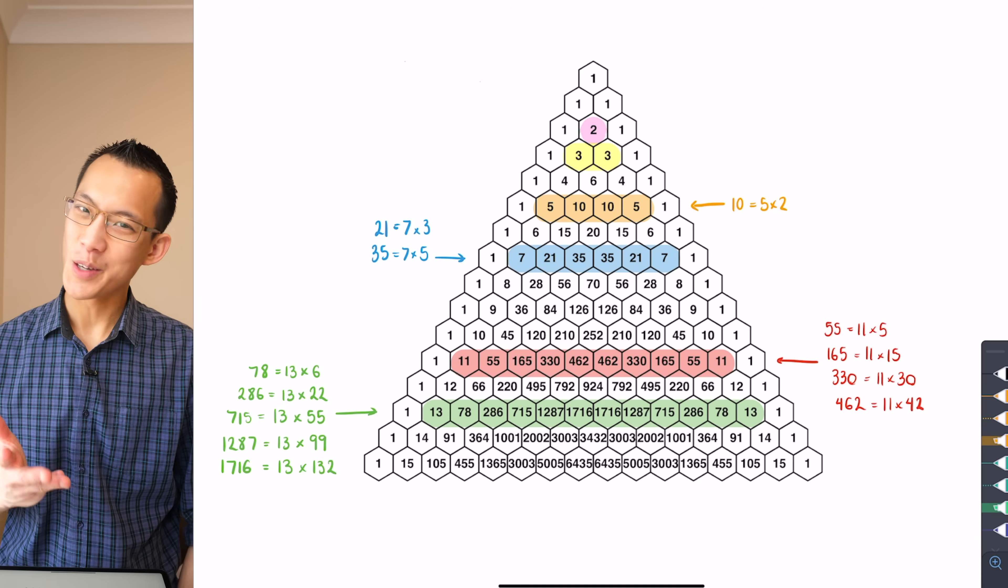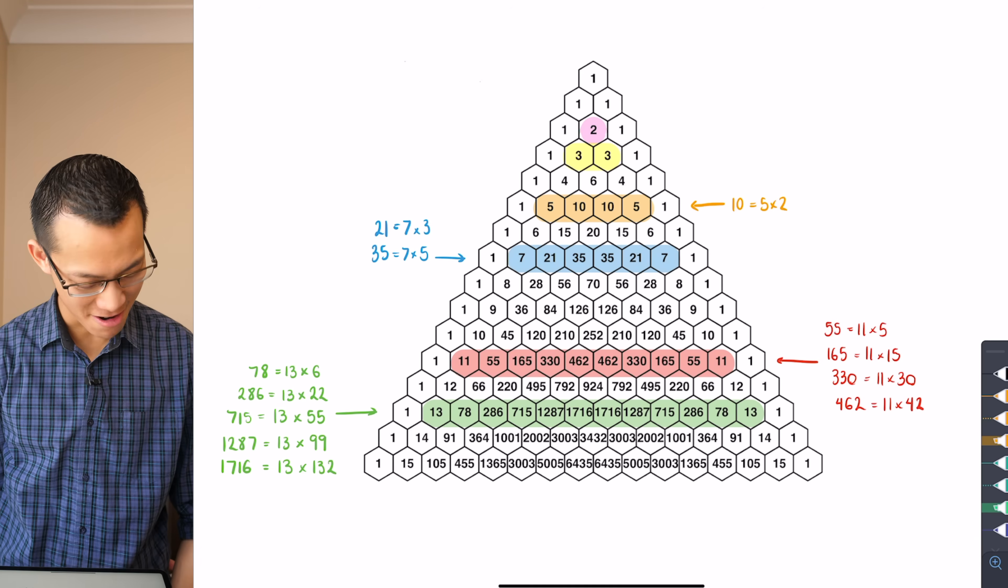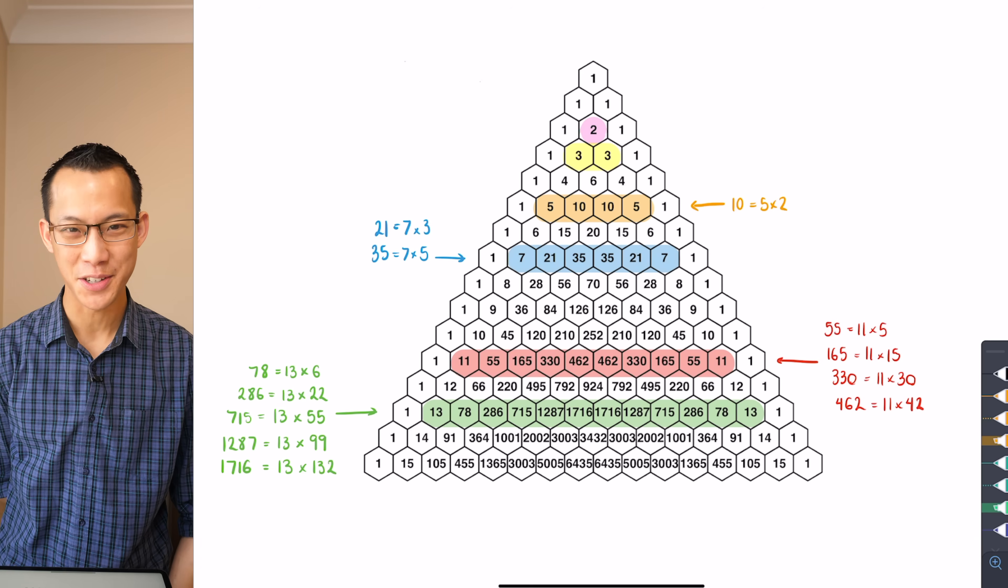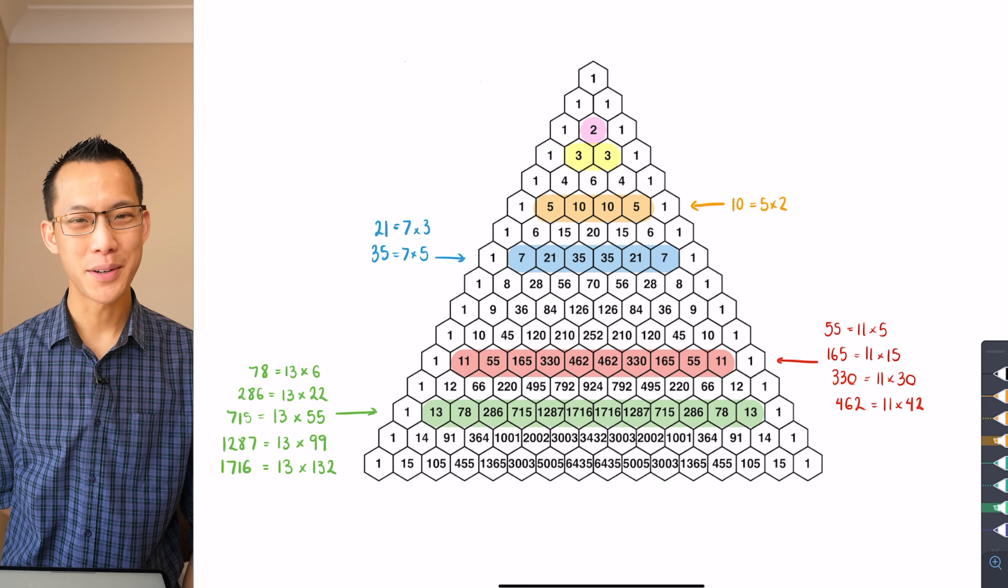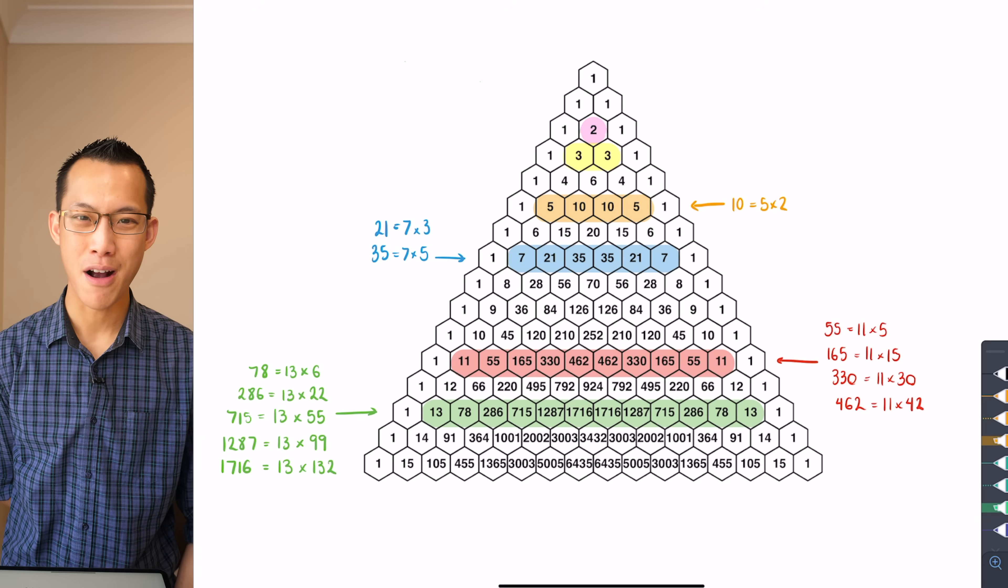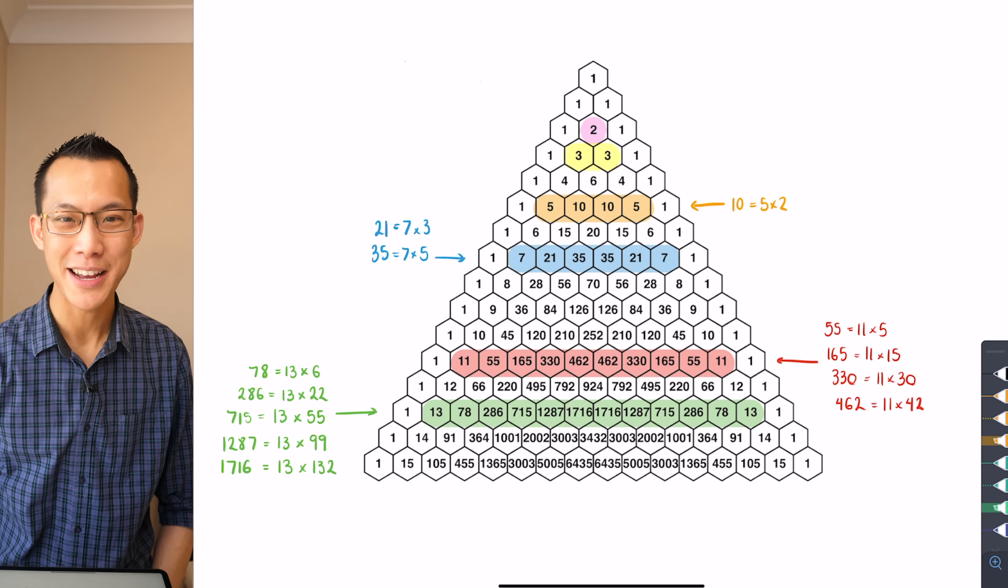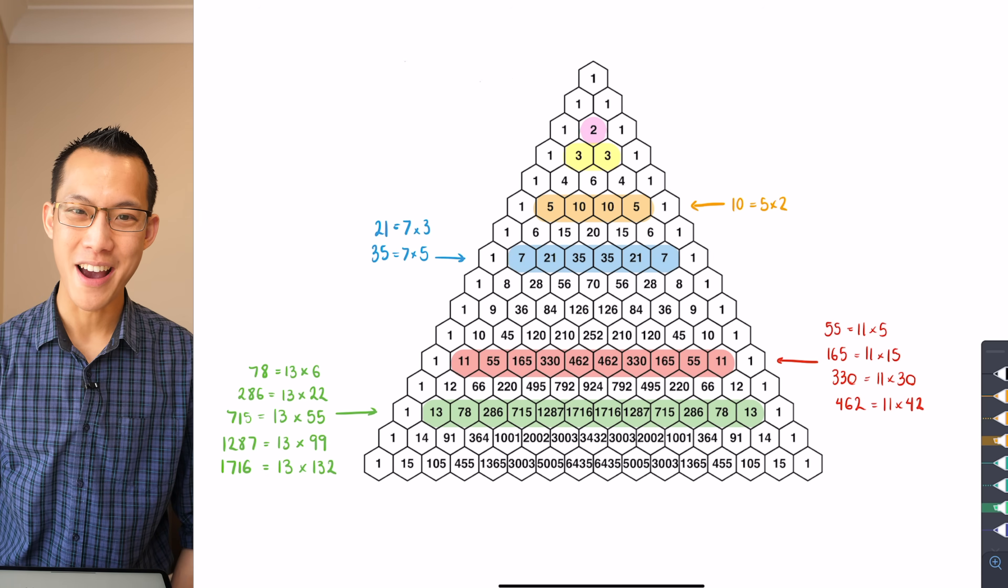I claim that this is always true, that no matter what prime row you go up until, you will always find, ignoring the ones, that all of the numbers are going to be multiples of the prime number that starts off that row. That's my claim. And I'm going to ask you to try and prove it.